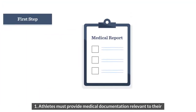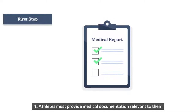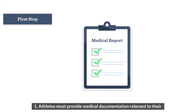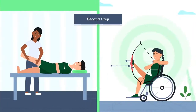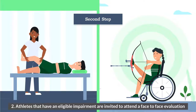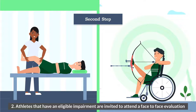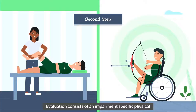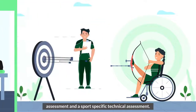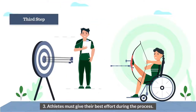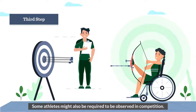The classification process is divided into the following steps. First, athletes must provide medical documentation relevant to their impairment in advance of classification. Second, athletes with an eligible impairment are invited to attend a face-to-face evaluation, which consists of an impairment-specific physical assessment and a sport-specific technical assessment. Third, athletes must give their best effort during the process, and some athletes might also be required to be observed in competition.